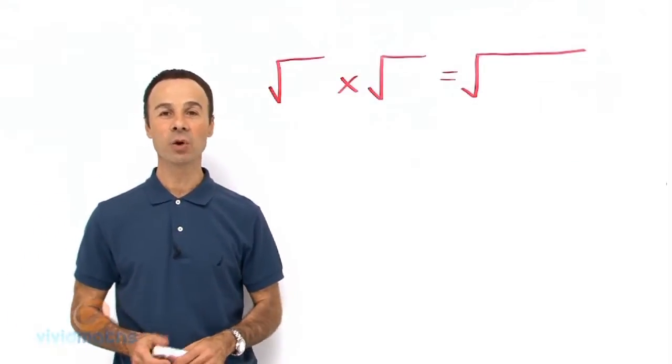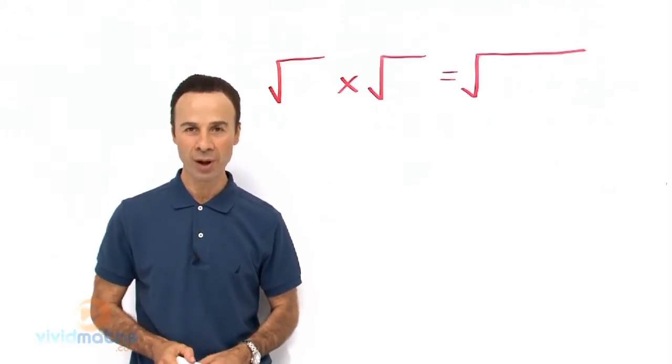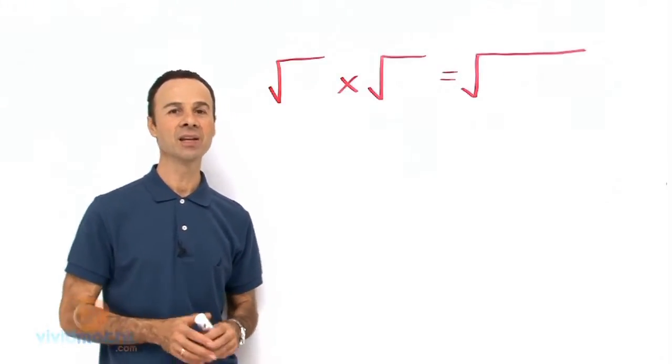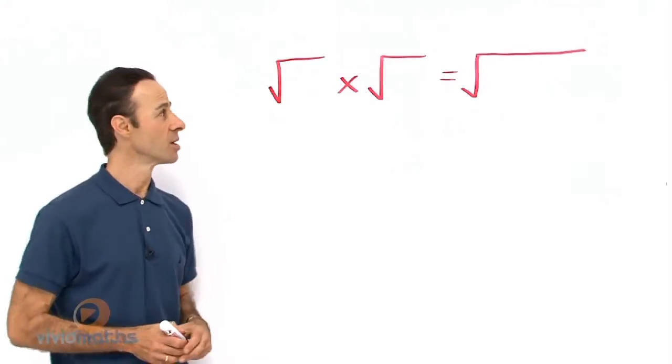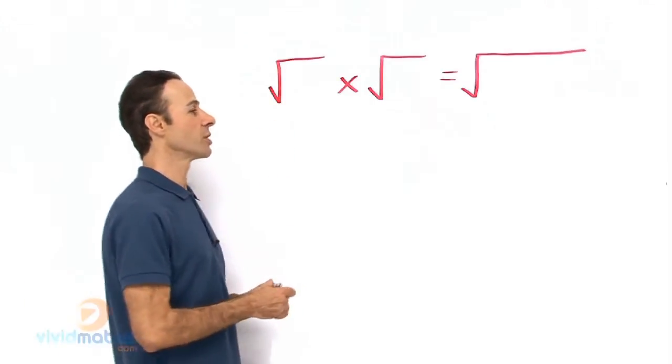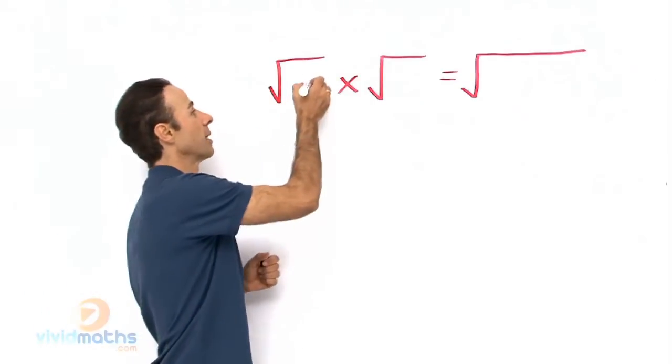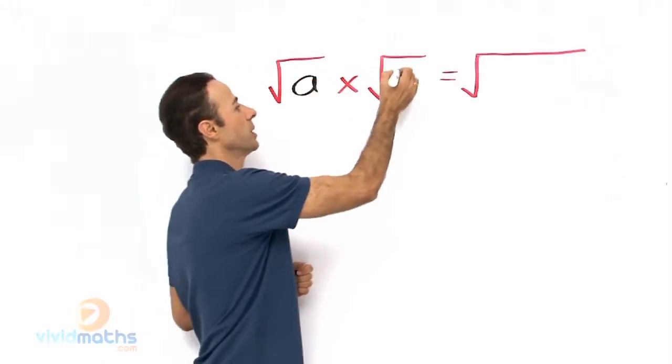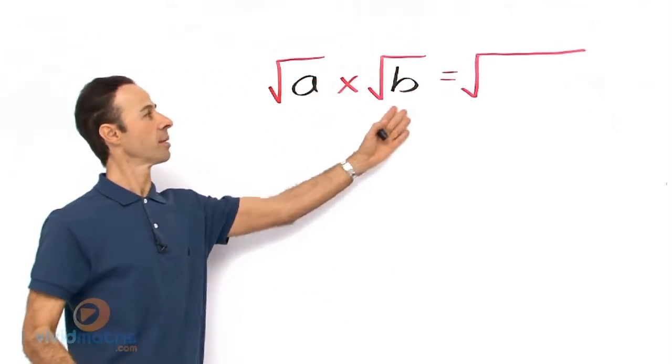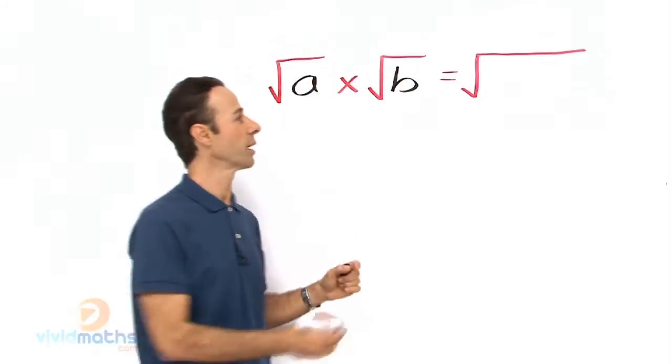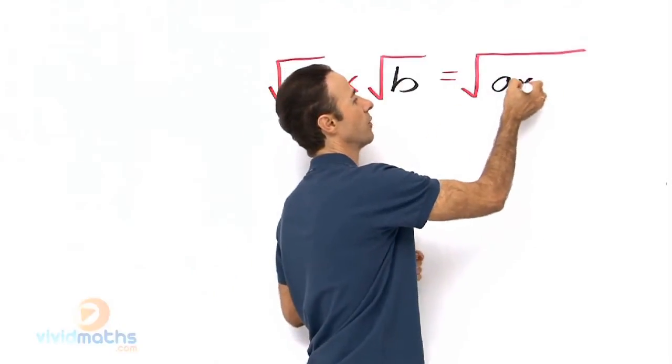Okay guys, let me reveal to you rule number 1 for surds, and that is in terms of multiplication. So if we got two surds multiplied, for example let's call them A and B, if we multiply them separately then we will get the square root of A times B.